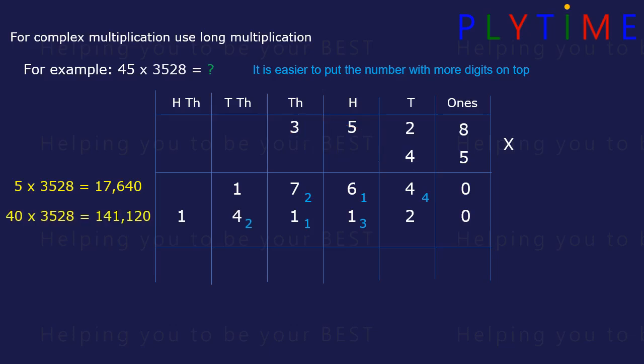This line is the same as 40 times 3528. Now all we need to do is add together the numbers in our columns.